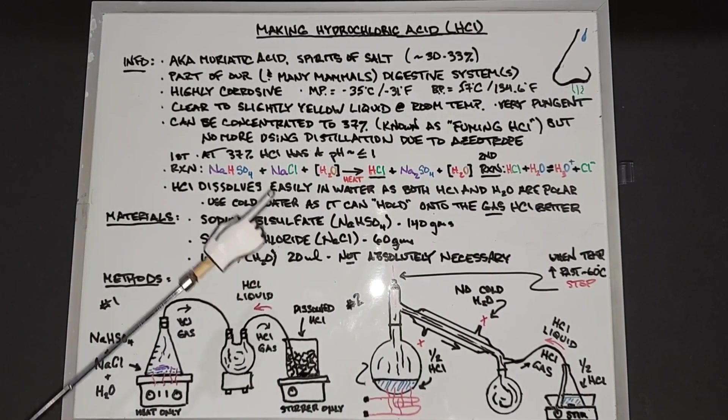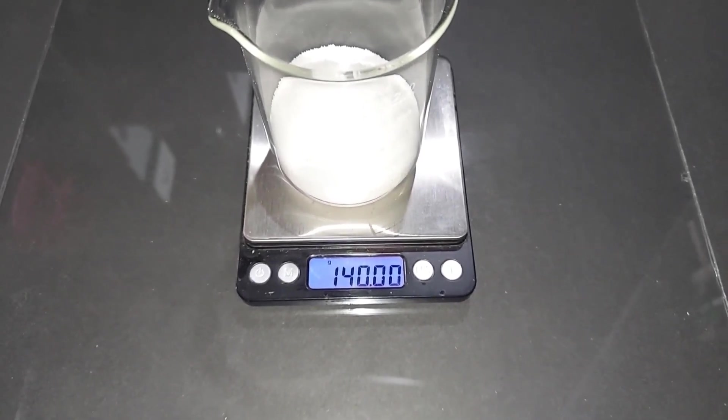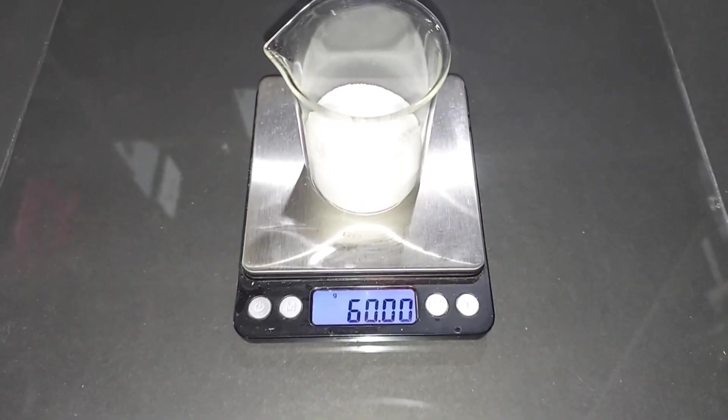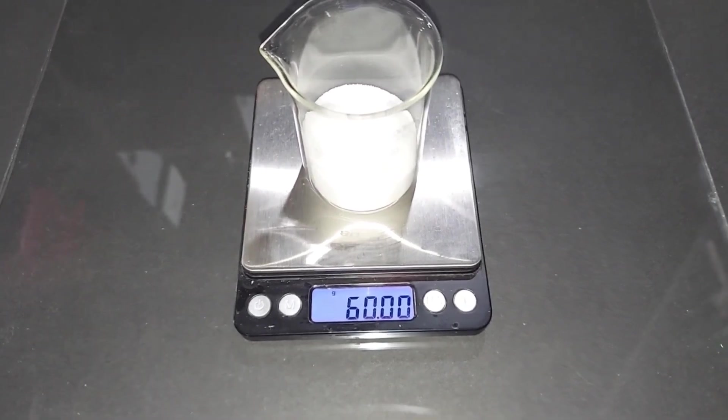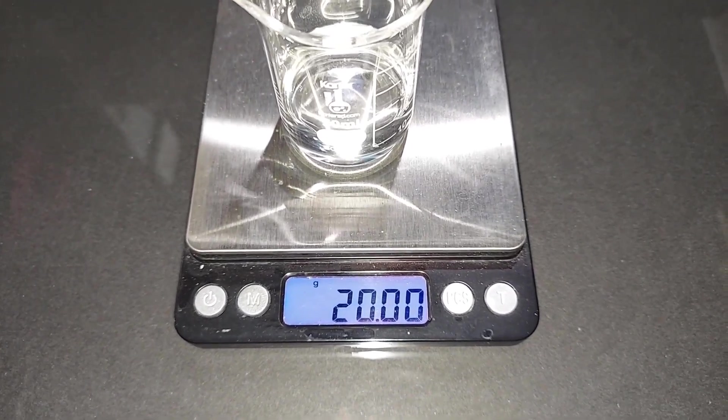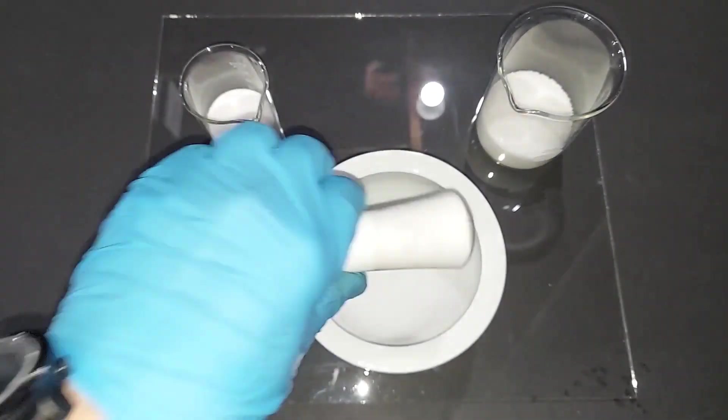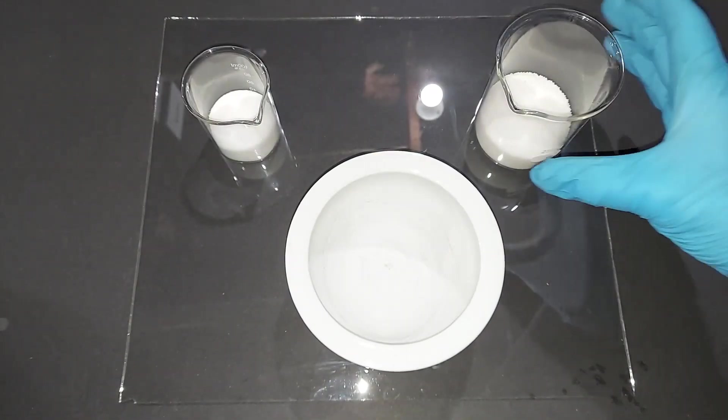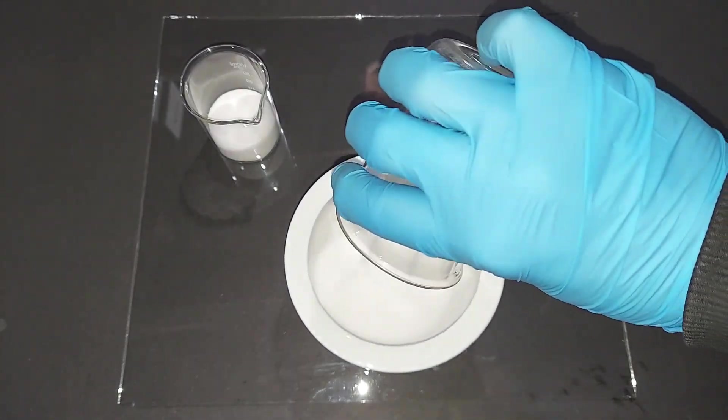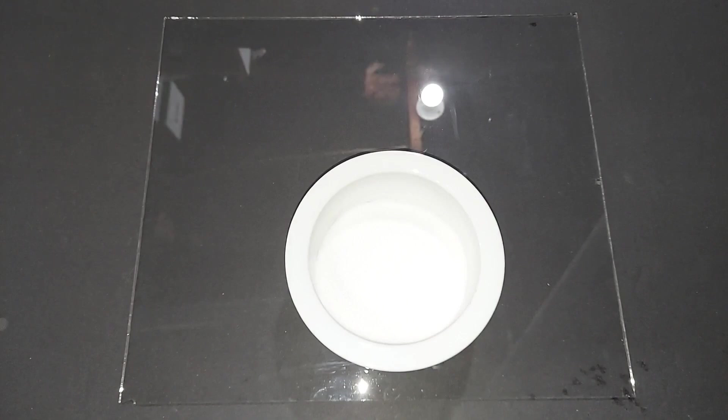Really really hope this explanation made some sense but you'll see it as I do it. We're done here, let's go do this. 140 grams of sodium bisulfate pre-weighed, 60 grams of salt sodium chloride pre-weighed, 20 milliliters of water. I did this just to remind us that one milliliter of water weighs exactly one gram.